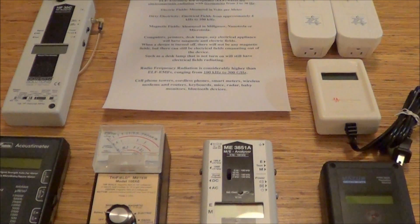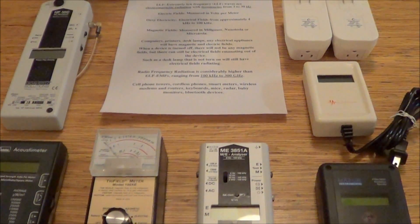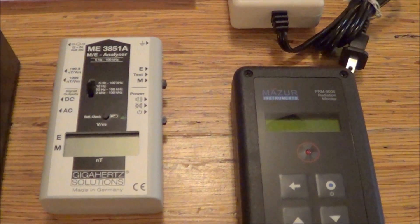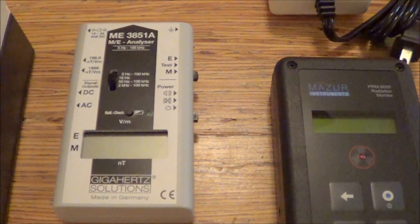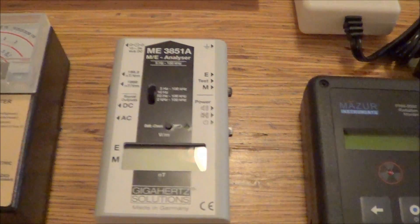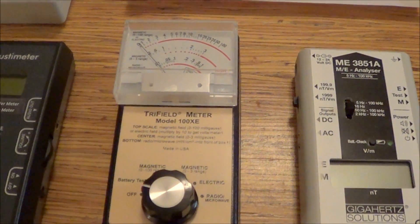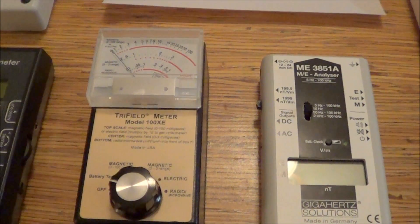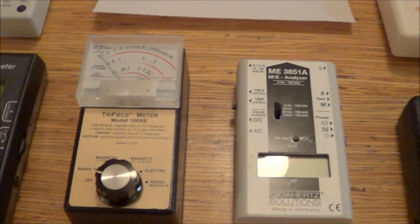Magnetic fields are measured in milligauss, nanotesla, and microtesla. The gigahertz solutions meter here measures in nanotesla, and the trifield meter measures in milligauss. And again, both of those can measure magnetic fields.